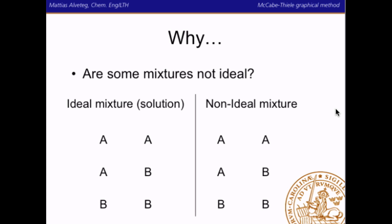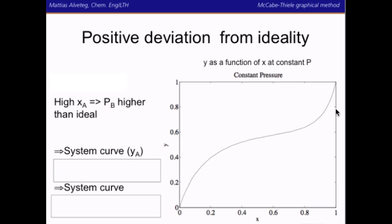But why is it that some mixtures are ideal and some are not? In an ideal mixture, or solution, the forces between different kinds of molecules are equally strong — the forces between molecules of kind A are equally strong as the forces between molecules of kind B. In a non-ideal mixture, the forces are different; for example, the forces between the B molecules might be much stronger than the forces between the A molecules. This means that for a mixture to be ideal, the molecules must be very similar to each other. If we have positive deviation from ideality, the partial pressure of B will be much higher than ideal at high compositions of A, or low compositions of B.